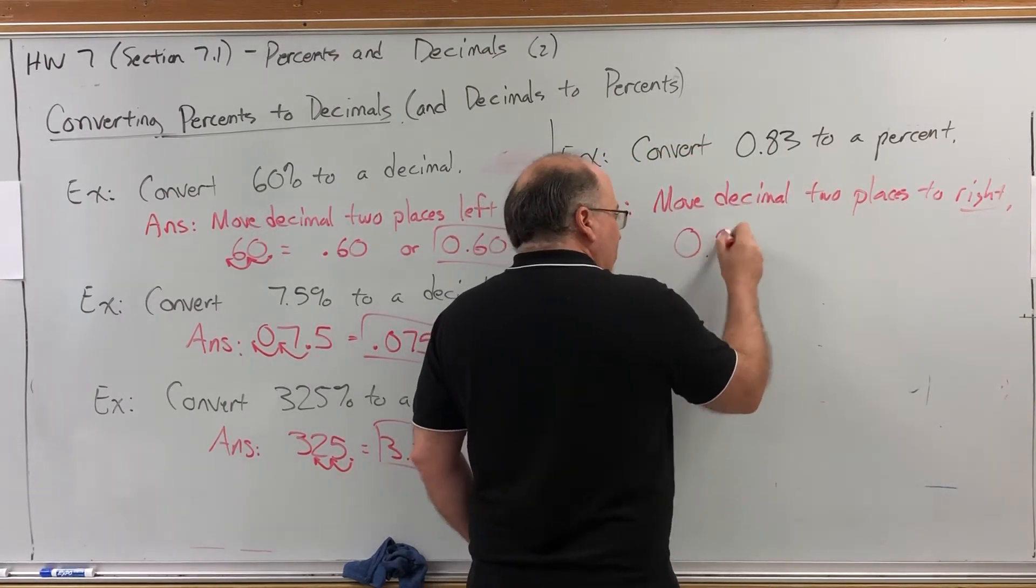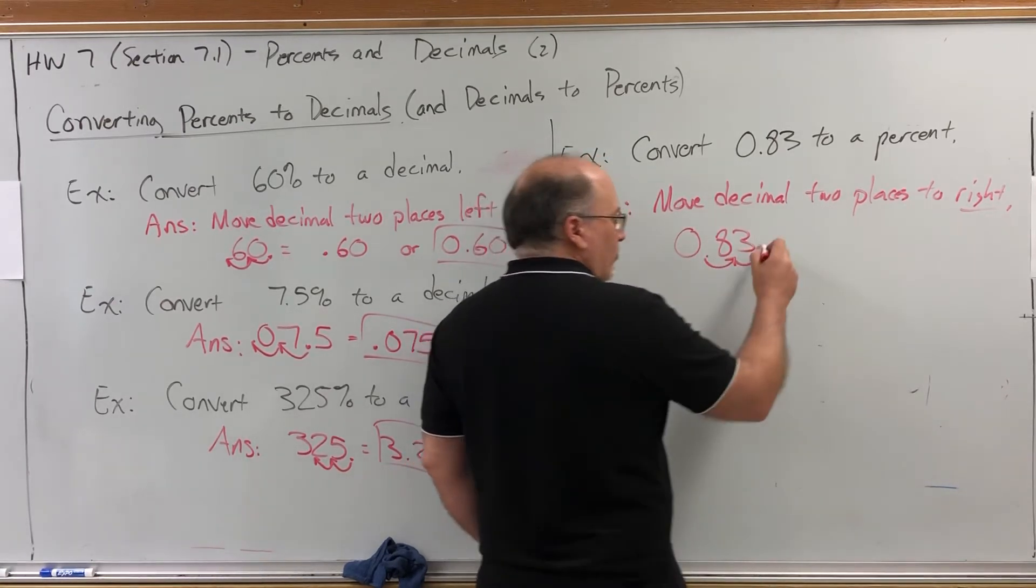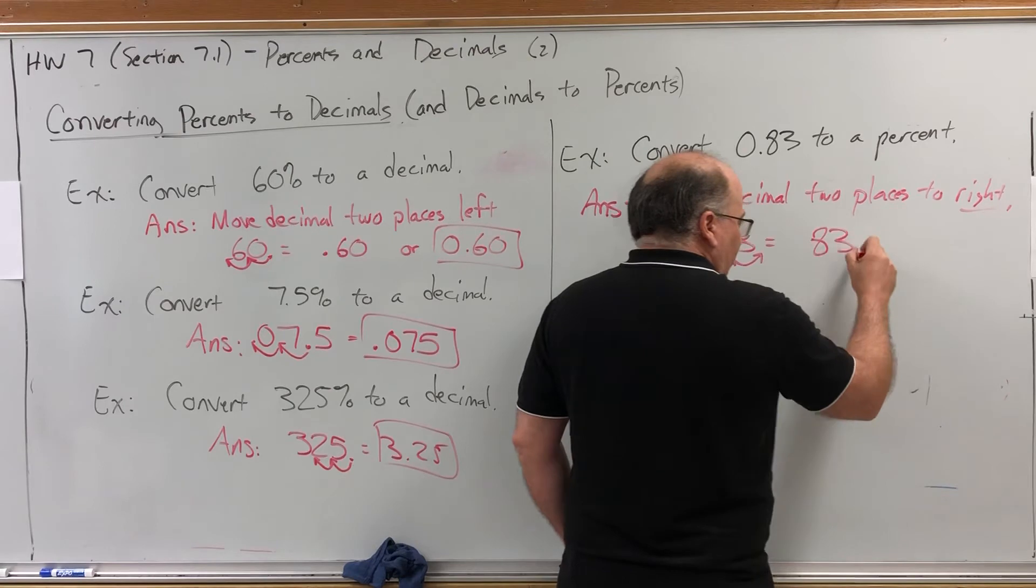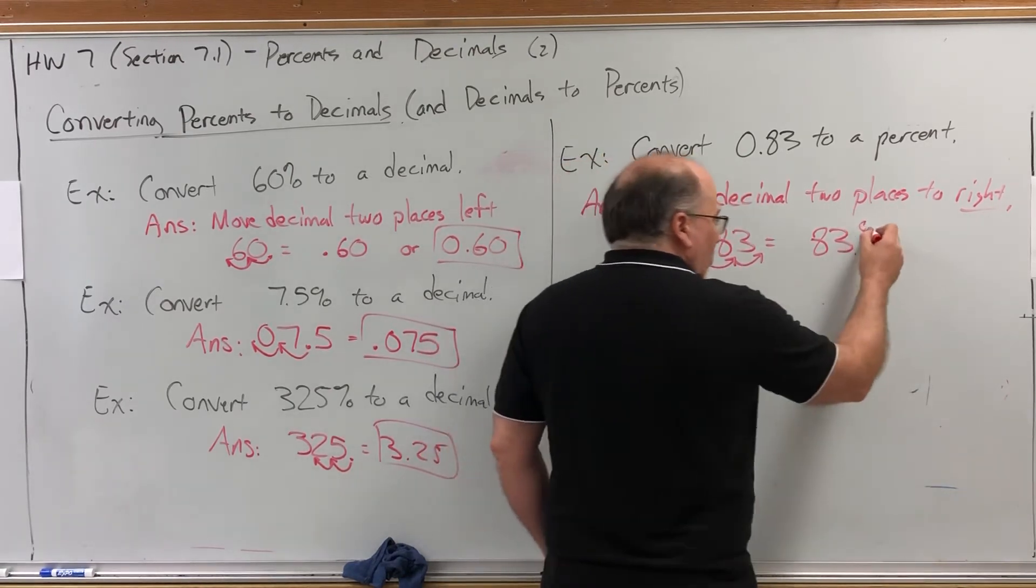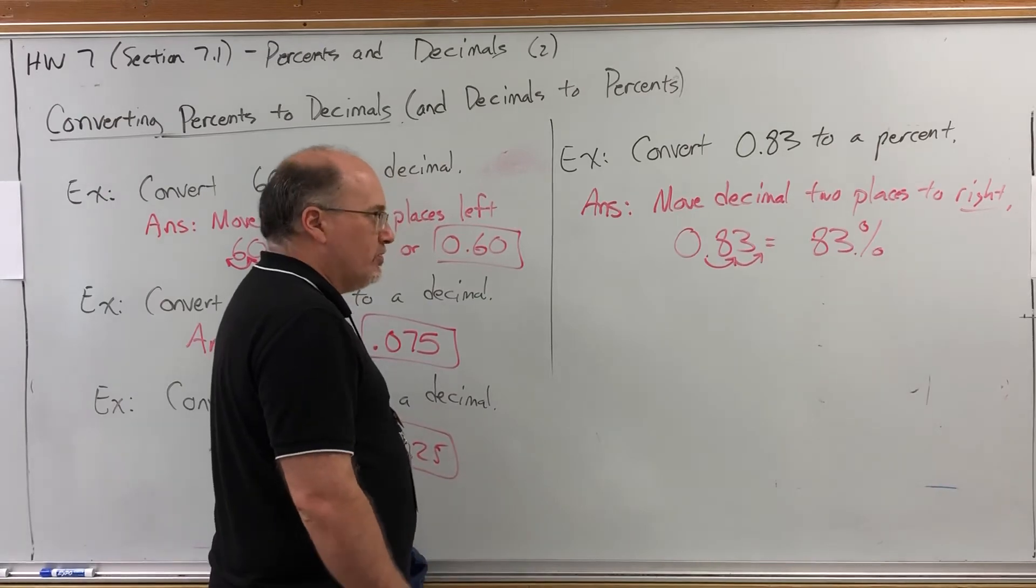So here's 0.83 before we do anything. If we move the decimal two places to the right, it's on the right side of the three, so we don't need it anymore. And we have the percent. So it's really pretty straightforward.